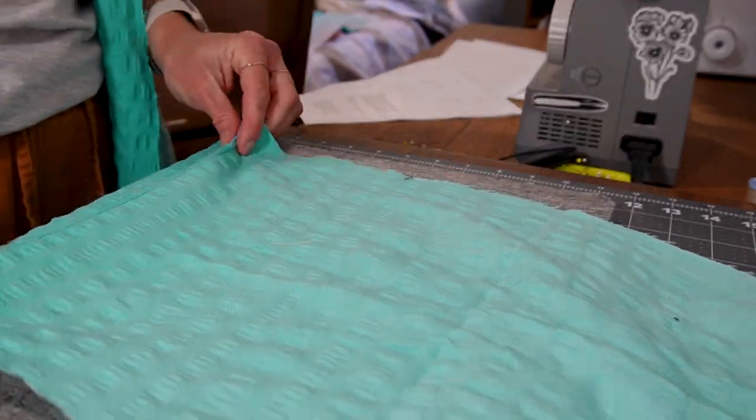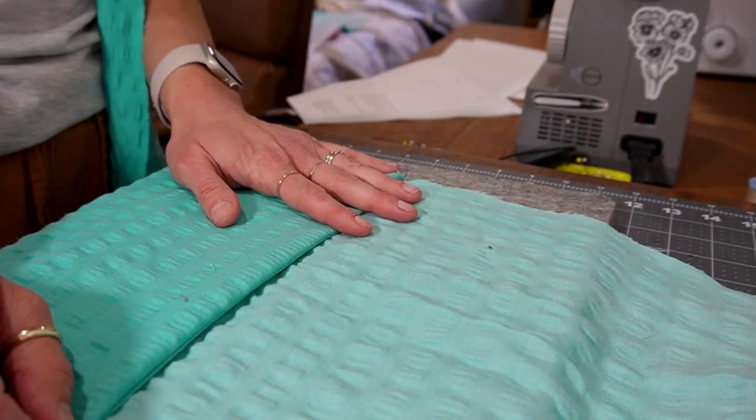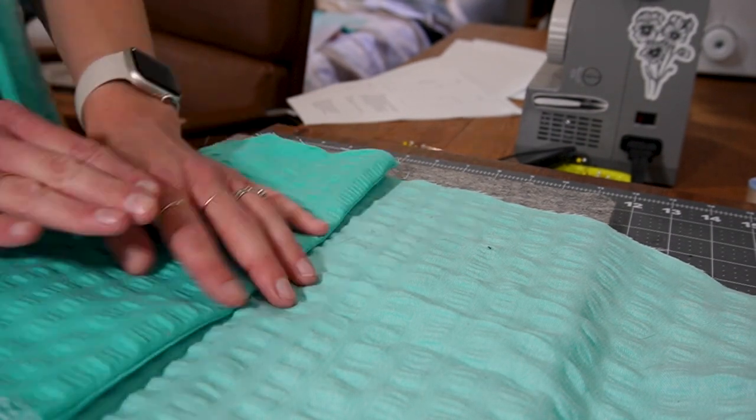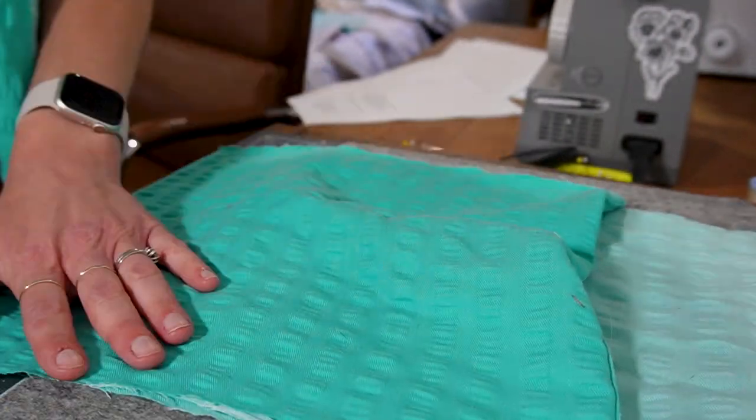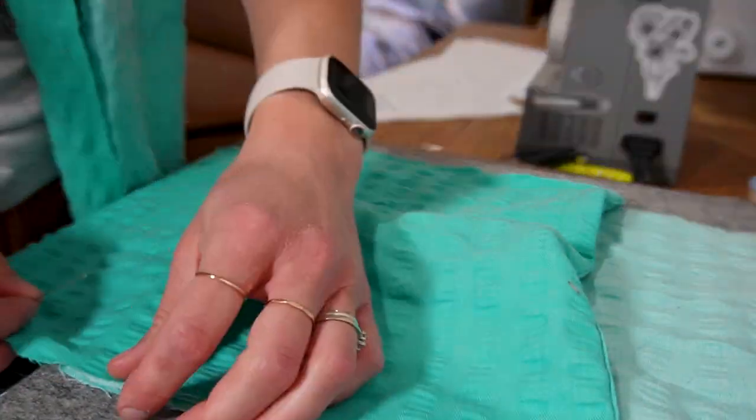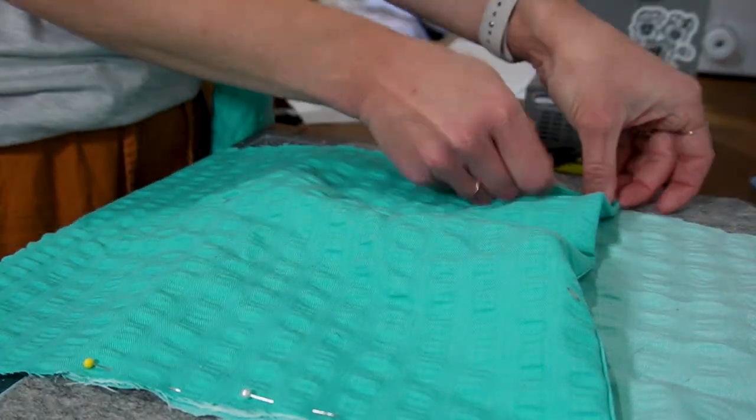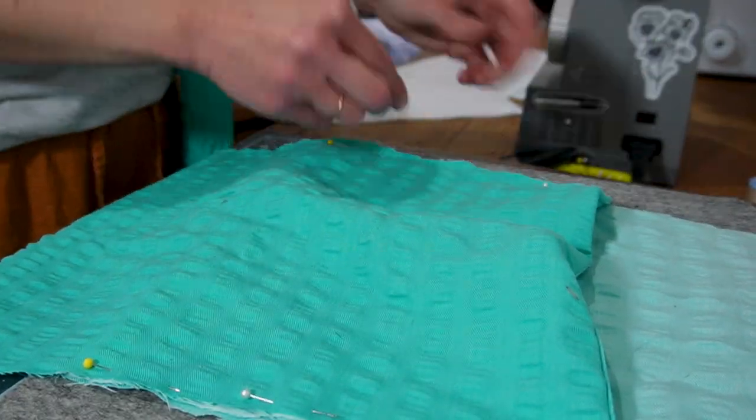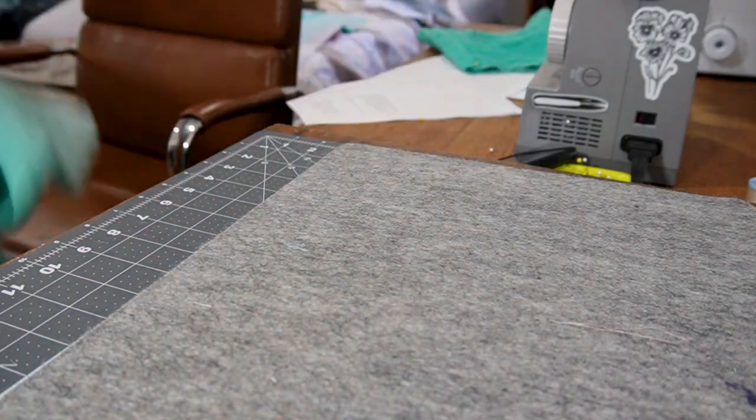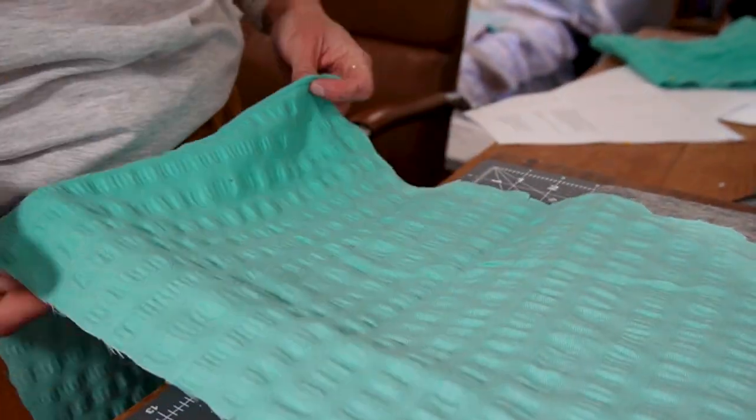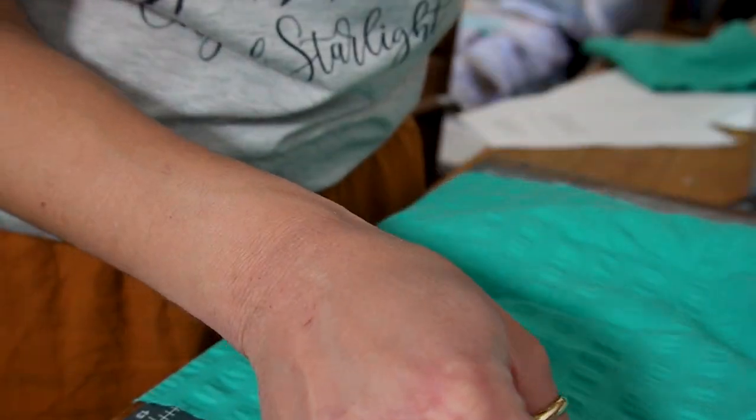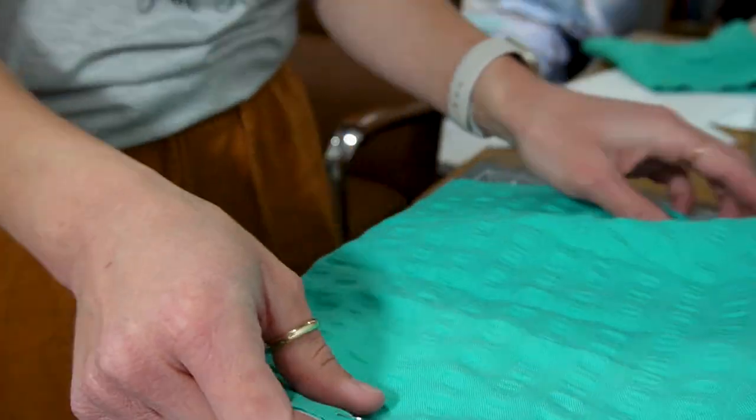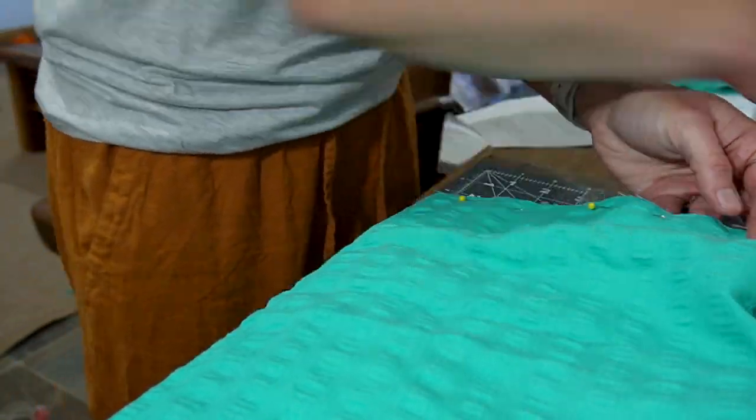So now according to the pattern, our next step is to pull the bottom edge of the side panel up to the top edge of the side panel, making sure that we are on the fold line, and that creates our pocket. On the pattern pieces there will be a fold line mark on, I believe it's the upper panel of the side panel, and you'll just want to create a little snip on your fabric at that spot so you know where to fold it.